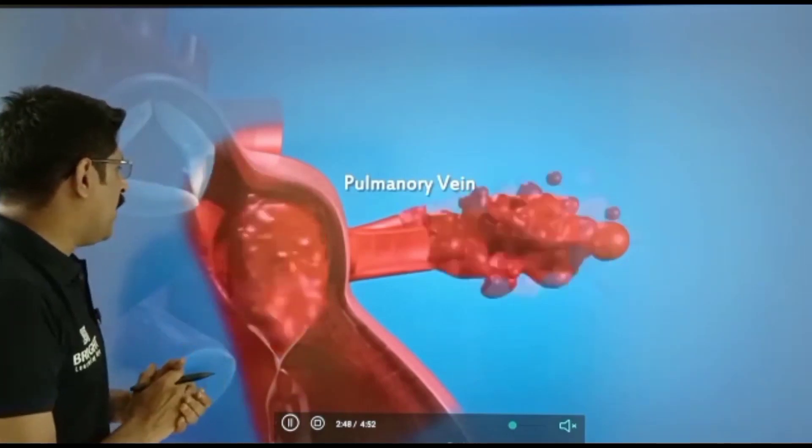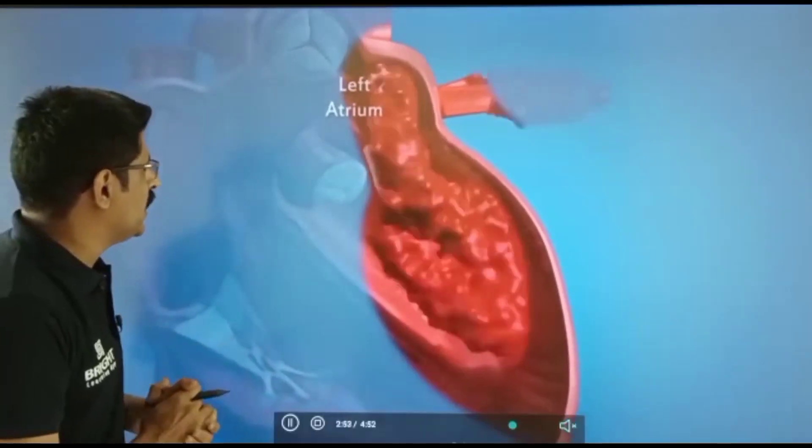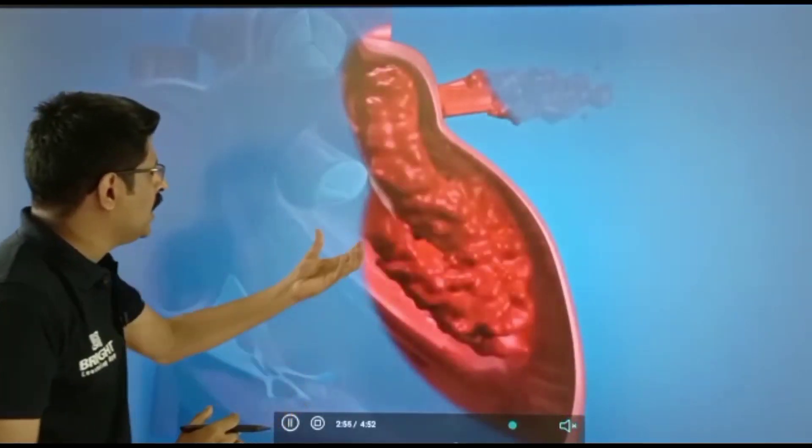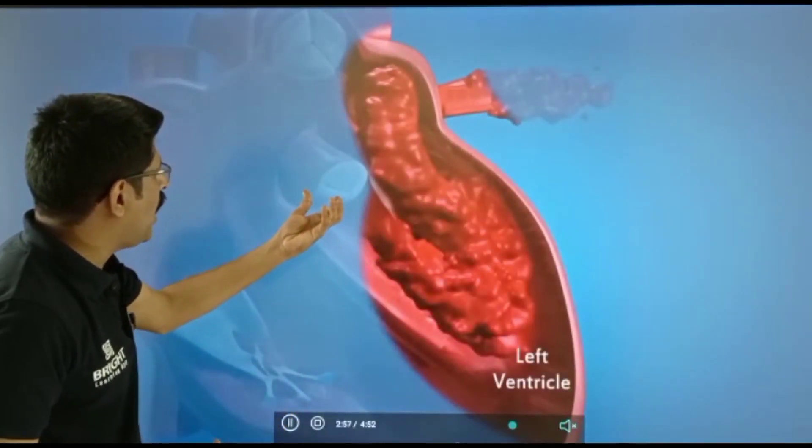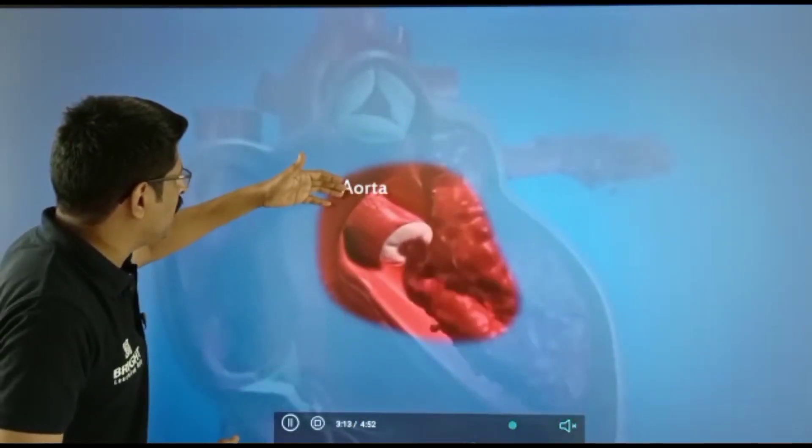From the left atrium, blood moves to the left ventricle. From the left ventricle, the blood pumps into the aorta. See here the valve opens and blood pumps into the aorta, which is the largest blood vessel that carries blood all over the body.